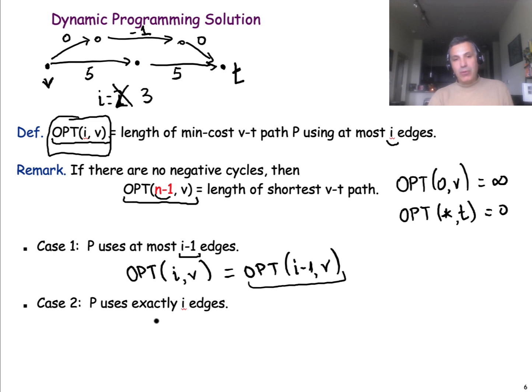The opposite case is that the optimal path, the minimum cost path from V to T, uses exactly I edges. So, how can we then solve this problem? We can think of this optimal path that consists of I edges as one edge that will take us from node V to some node W, plus the optimal cost to go from W to the target if we have I minus 1 edges, right?